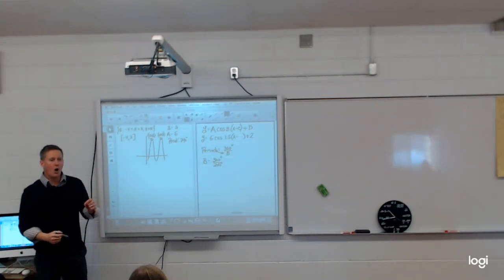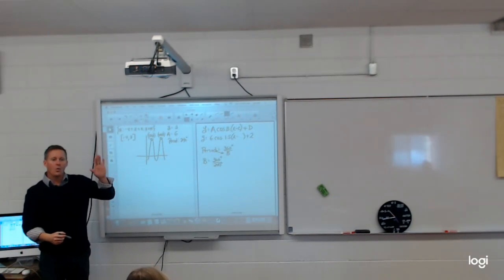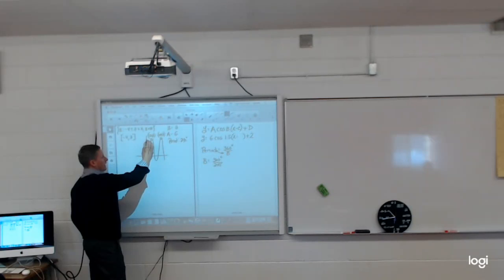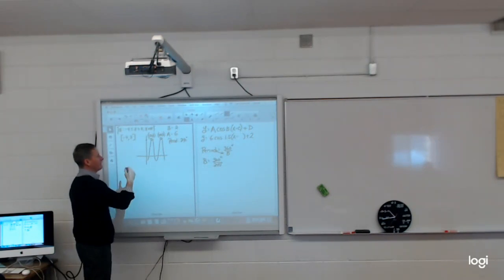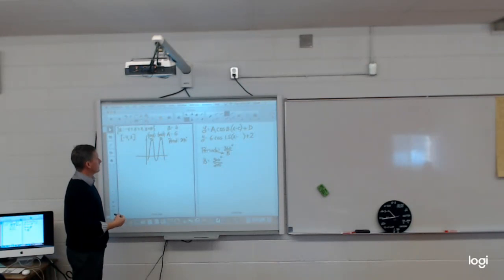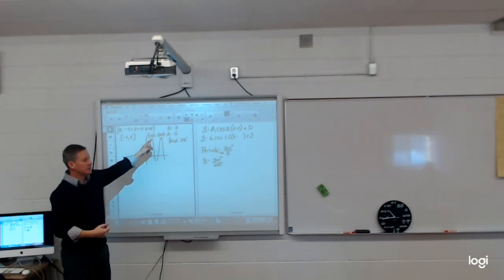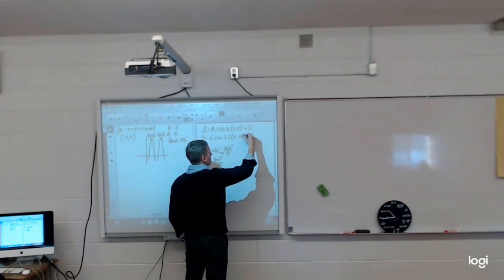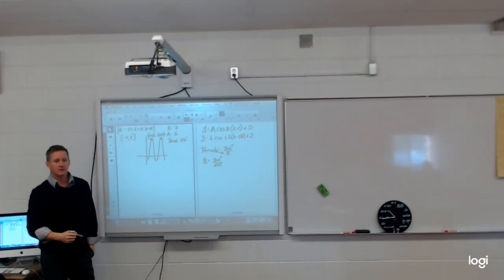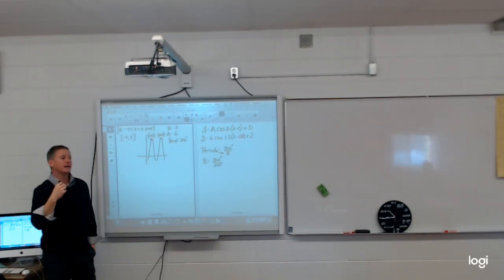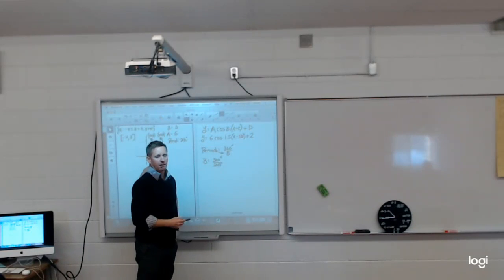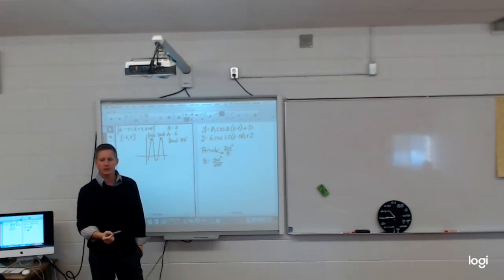Now all I need is to find out where this cosine graph started at its maximum. Normally cosine starts at its maximum at 0, but my first maximum value is at x equals 120. So I put my C value as 120 degrees. I could also have put 360 in there and still gotten the exact same equation — there are an infinite number of answers.